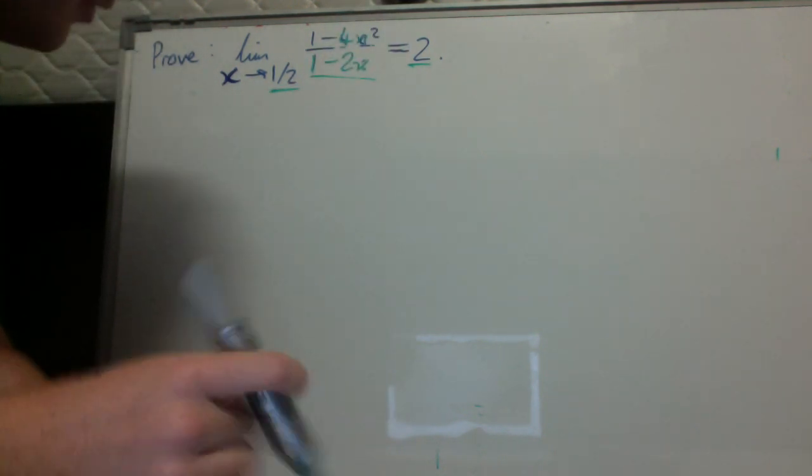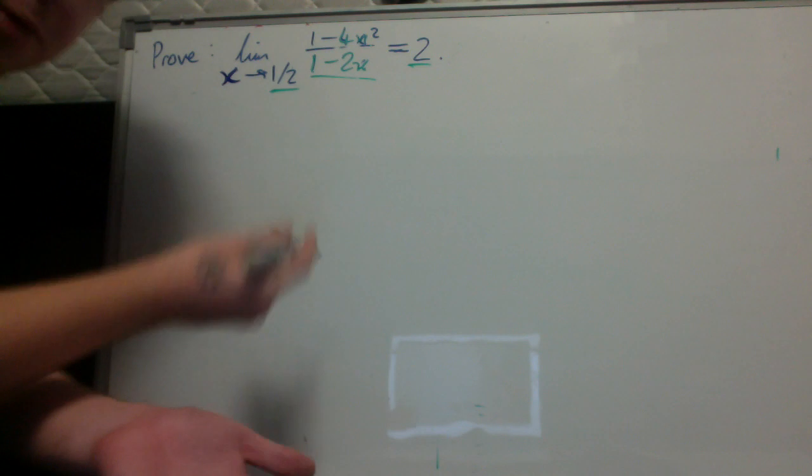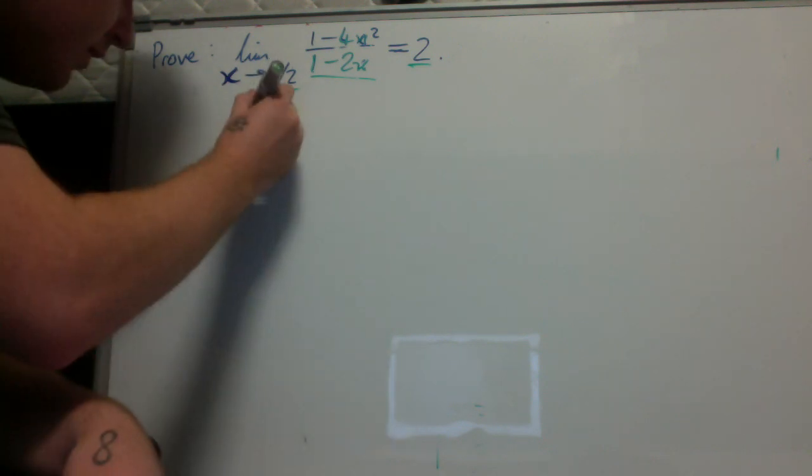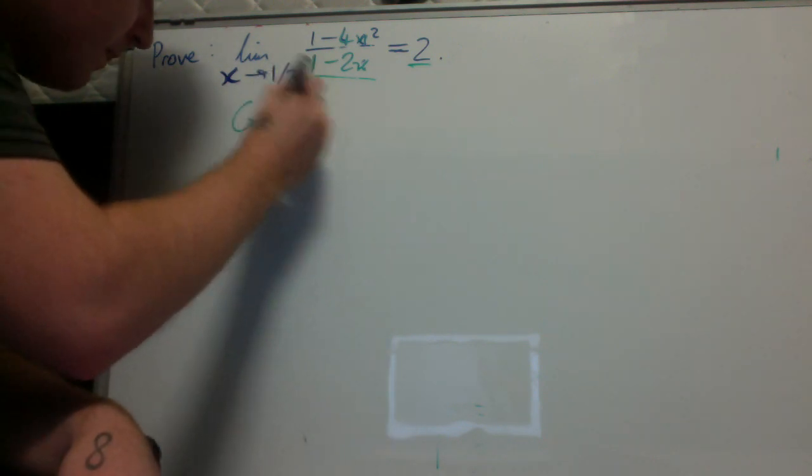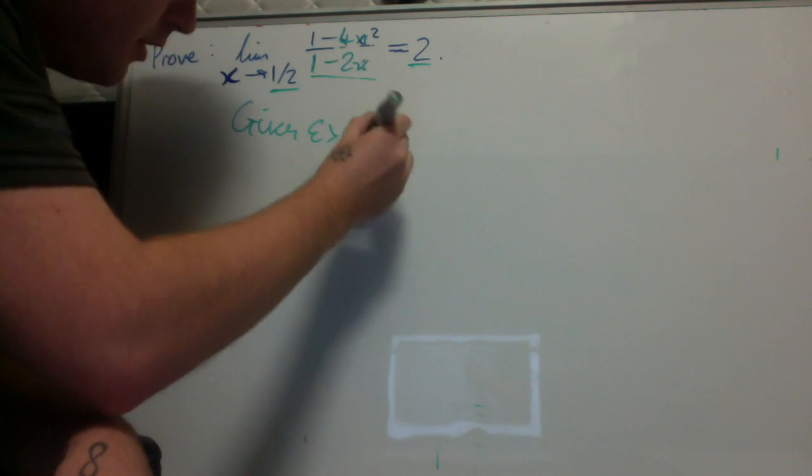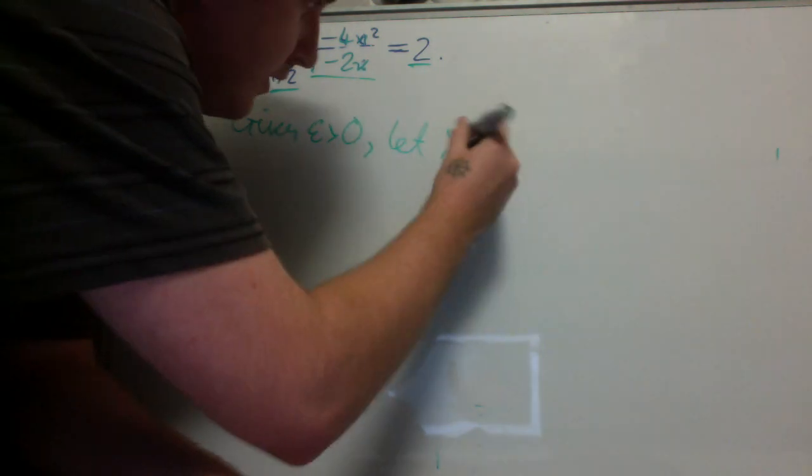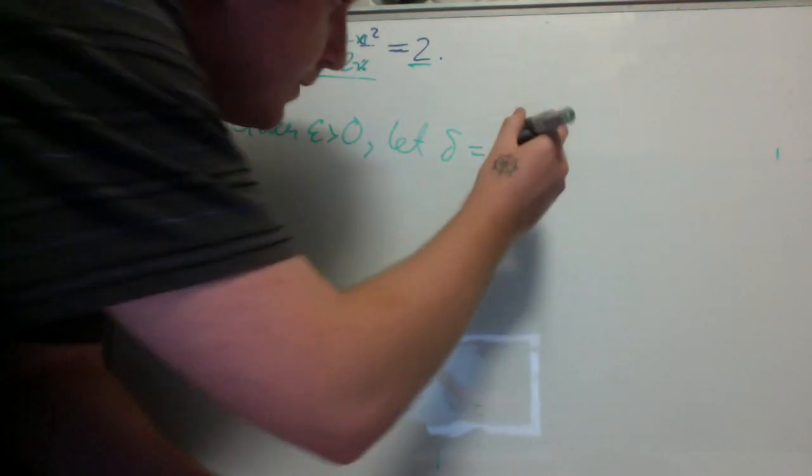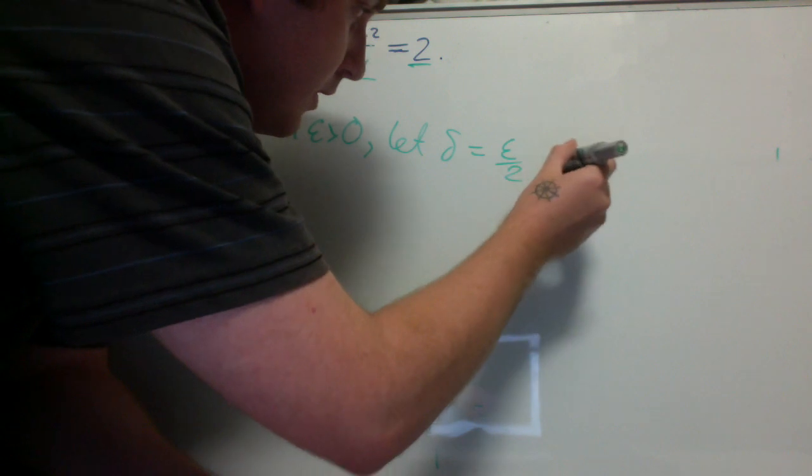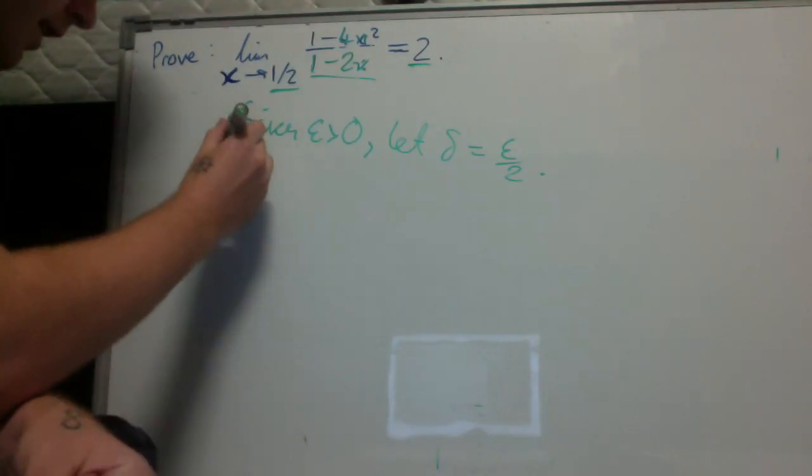Okay, let's see the proof. The way you start the proof is you say: given epsilon greater than 0, let delta equal whatever you found, epsilon over 2. Hence,